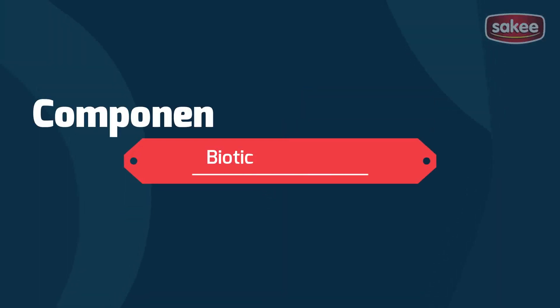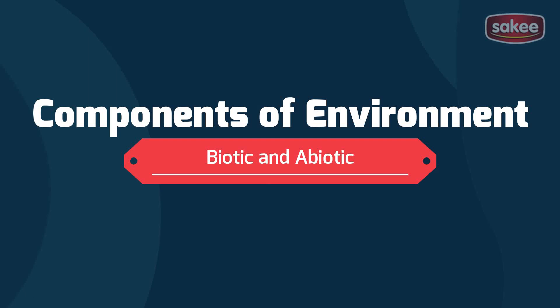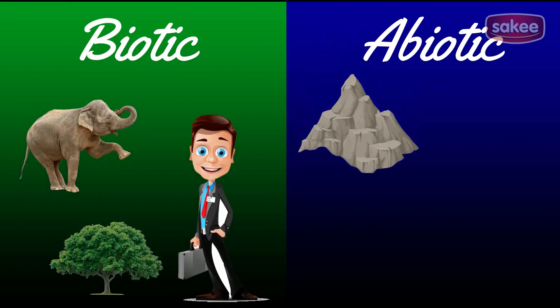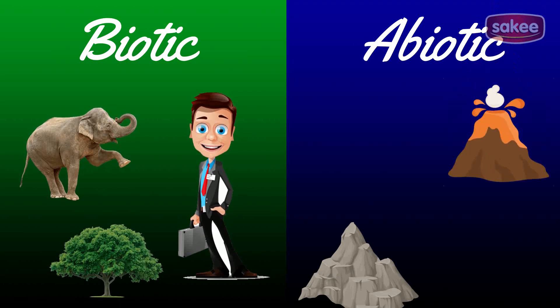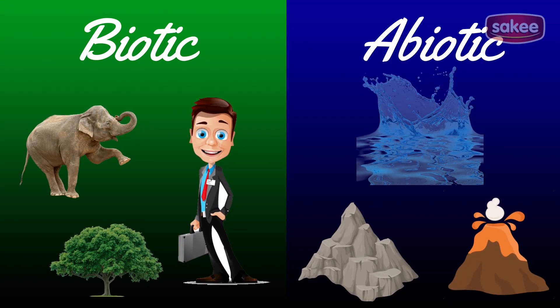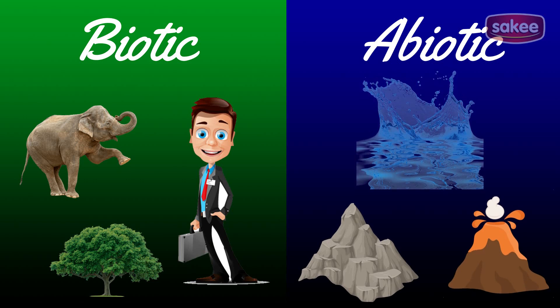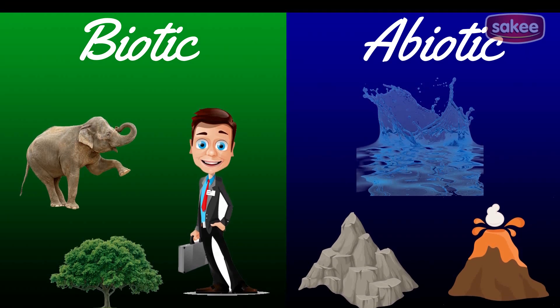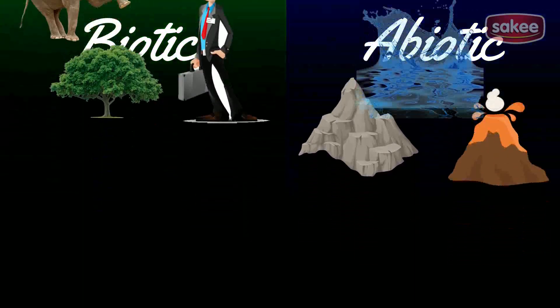Now we are going to see the components of environment. The environment is divided into two types: biotic and abiotic. Biotic means living things, and abiotic means non-living things. Living things include human beings, plants, animals, etc. Non-living things include mountains, water, volcanoes, etc. Both these components are very important for our environment.